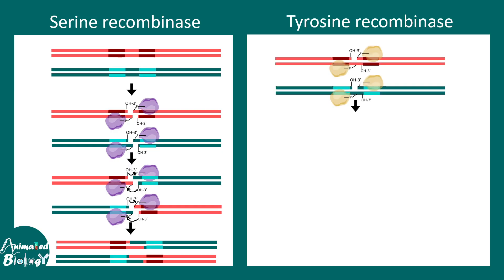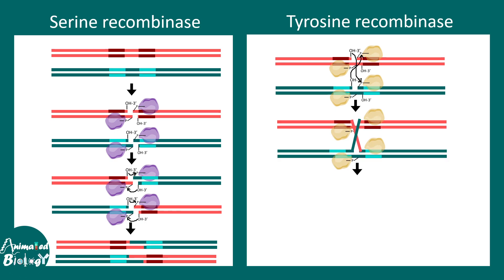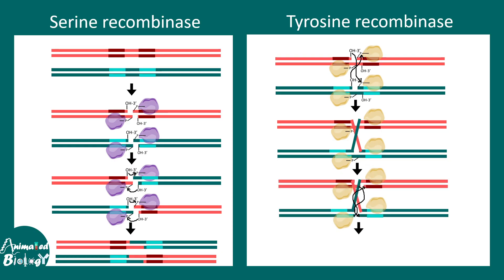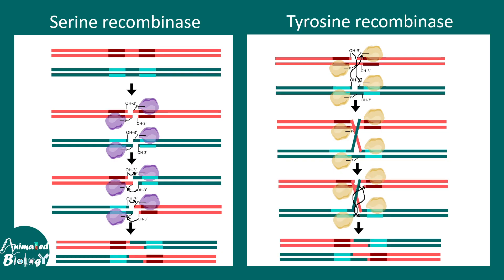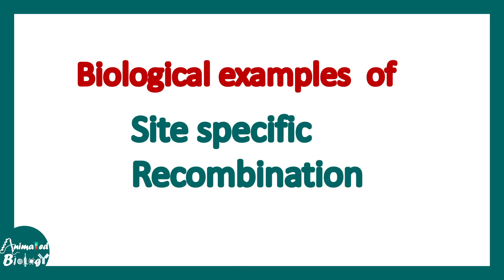Tyrosine recombinase is a bit different. Here one strand at a time is taken care of — the breakage of two strands doesn't happen simultaneously. Tyrosine recombinase forms the enzyme-DNA complex for one strand only, strand exchange happens for that one strand, and eventually the second strand is also exchanged and recombination is complete. The outcome is the same as serine recombinase but the way it is achieved is different.